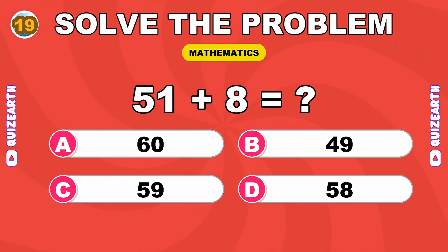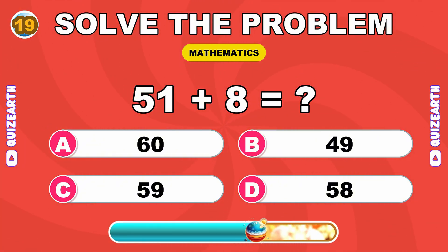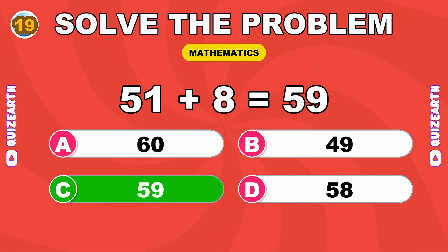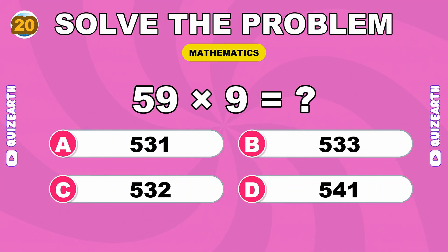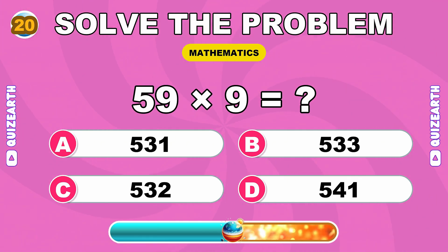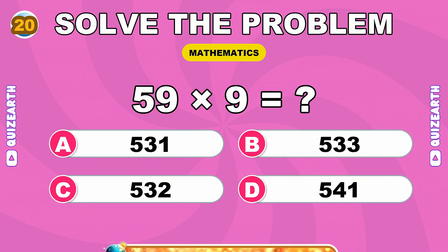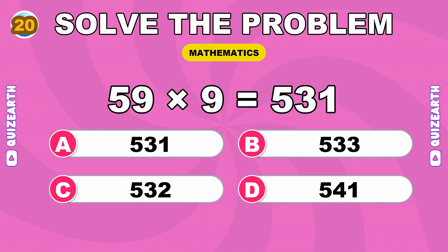What is 51 plus 8? Phenomenal, 59. How much is 59 times 9? Absolute mastery, 531.